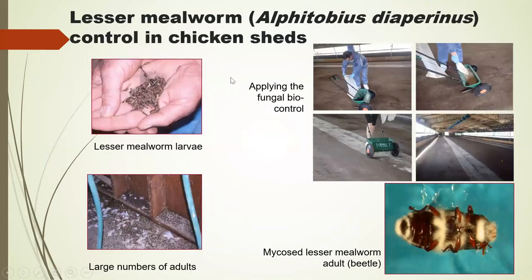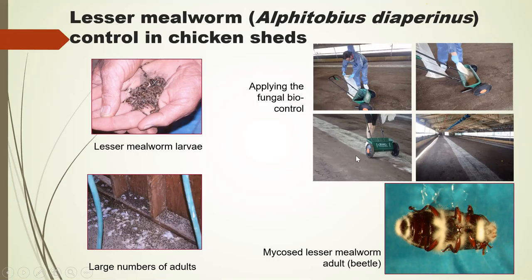A current project I helped get started is now being led by my successor Steven Rice, an expert on lesser mealworms. Wherever you've got birds, you'll have the darkling beetle and lesser mealworm — the ground of chicken sheds can be crawling with these larvae. They vector pathogens, and the adults can destroy building insulation. You don't really want chemicals in these environments. Steven came up with a great formulation that can be put down with a simple fertilizer spreader, and we've had great results. He's now running a new project on different types of chicken sheds with concrete floors, hopefully to be registered at the end of the year.